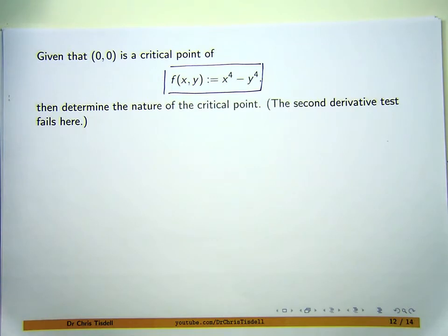So the question is, how do I know, if I know the origin is a critical point, how do I classify it? Is it a local minimum or a local maximum or something in between, the saddle point, which is like a point of inflection? How do we do it?